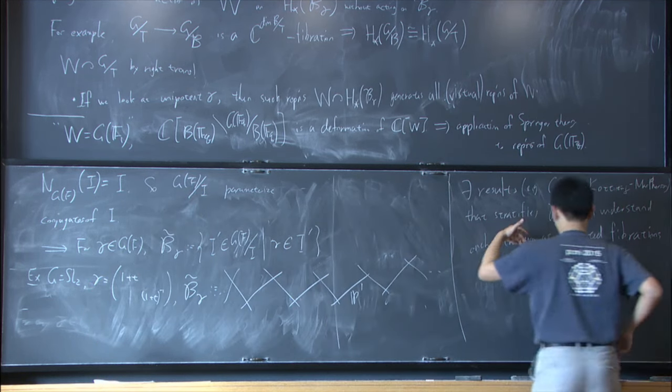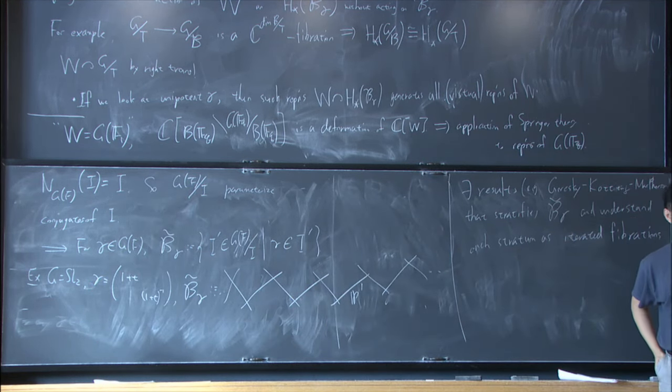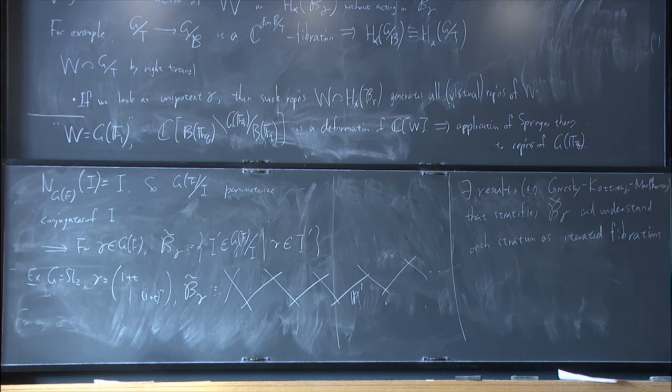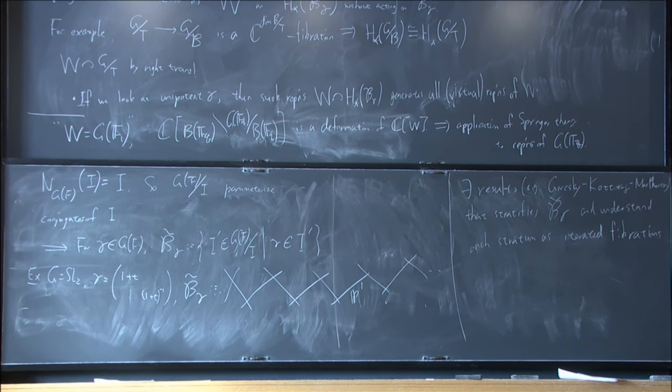But just to give examples, for example, in this stratification, you can see varieties that look like symmetric powers of hyperelliptic curves. And therefore, to understand this homology or cohomology, you struggle. And that's the situation. So I will stop here. Thank you.